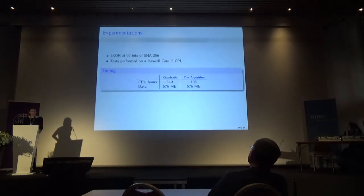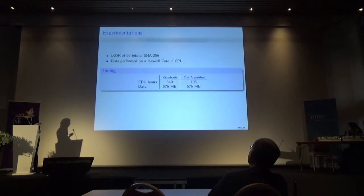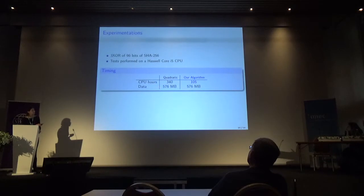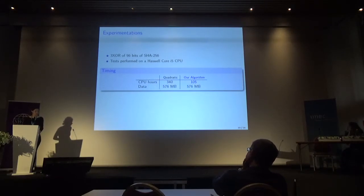We performed experiments computing 96 bits of SHA-256 on an Intel Core i5. After clamping, the quadratic algorithm took about 300 CPU hours, while our algorithm took about 100 CPU hours — so it is faster even in practice. The clamping also allows us to reduce the data to megabytes instead of gigabytes.